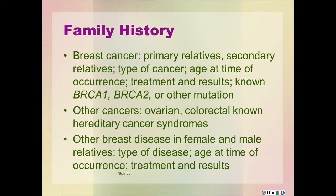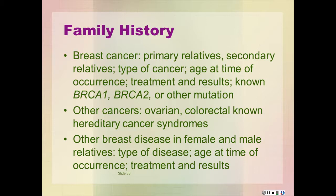What is the family history of breast cancer? Were there any primary or secondary relatives that had it? What type of cancer was it? What were their ages when the cancer was diagnosed? What kind of treatments were given and what were the treatment results? Are there any relatives with known BRCA1 or BRCA2 mutations? What other cancer history or other history of breast disease have family members had?